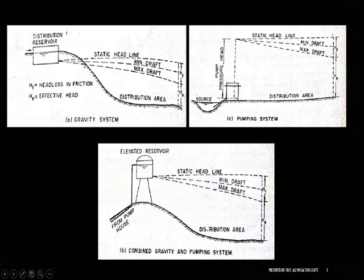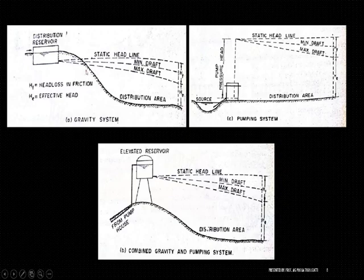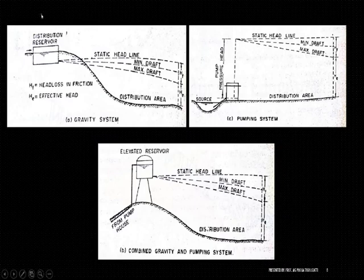What this situation states is: whenever you are going to distribute water in such low-lying areas, whatever the area is at the downstream, the force required to flow that particular water is just gravity, which is quite sufficient to maintain the pressure required for distribution. So in such areas where topography is quite low and your distribution reservoir is set at elevation, you can go for gravity. Simply by gravity you can have distribution of your water.